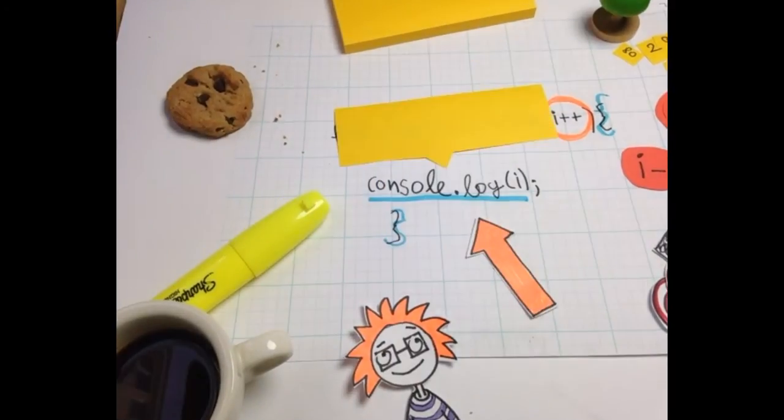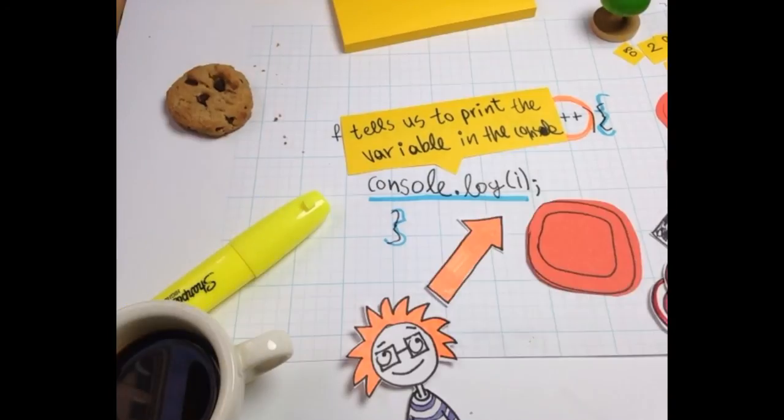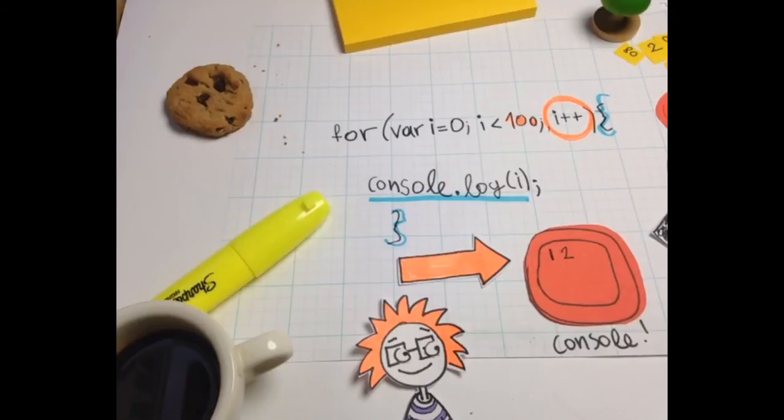And finally, the part between the brackets tells us to do something. In this case, to print the variable i on our console.